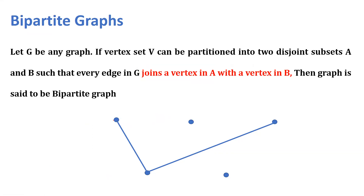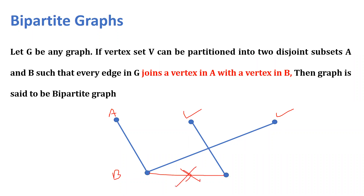You join the vertices of set A with the vertices of set B — you do not join a vertex in A with another vertex in A. You must join vertices of A only with vertices of B. In this way you make the bipartite graph. If you join vertices within the same set, it is not a bipartite graph.